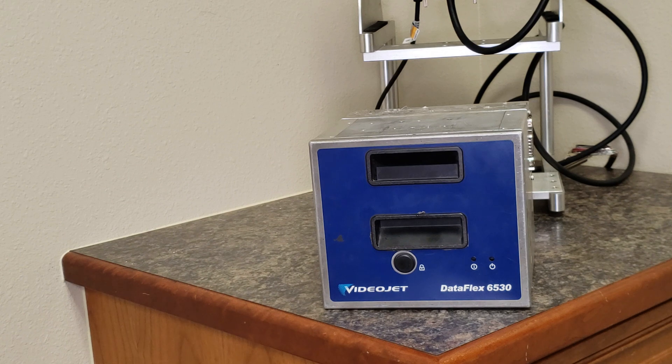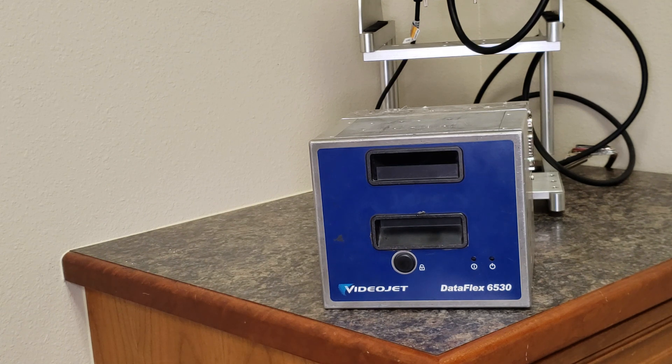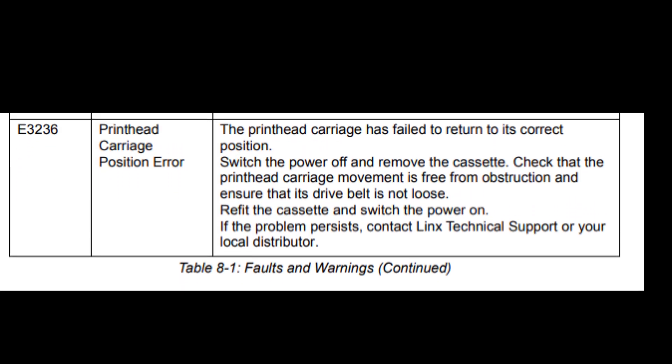Alright, so we got this unit mounted here right in front of our test stand. We have powered it on, looked at the event log, and of course we're getting the dreaded printhead carriage position error. E3236, printhead carriage position error.